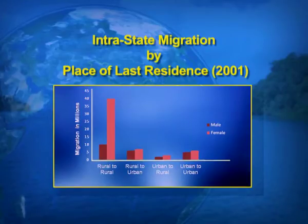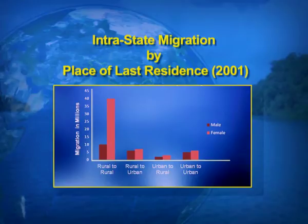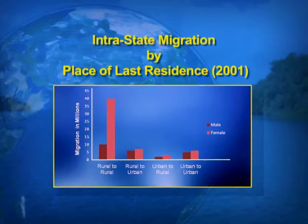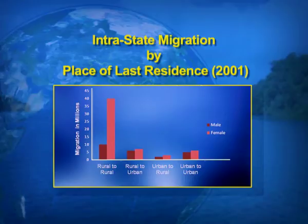You can see a bar diagram showing the intra-state migration by place of last residence, based on census 2001. This is a multiple bar diagram with two types of bars — one for males and one for females. The darker color, as the index indicates, is for the male population, and the lighter color is for female migration. In the rural-to-rural migration stream, which is a short-distance migration, females are outnumbering the male population.